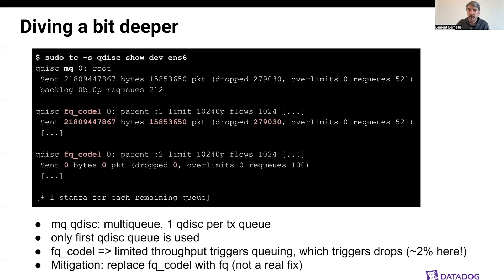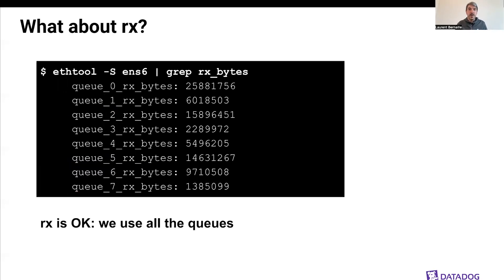What's interesting is the number of drops: we were dropping about 2% of packets. The reason for this is that the CoDel queuing discipline drops packets almost as soon as we start buffering, to avoid buffer bloat and additional latency due to buffers. When we saw this, we tested a mitigation — replacing FQCoDel with FQ — and that worked. It's not a real fix because we can still hit the maximum throughput of an instance, but at least we avoided the drops impacting TCP throughput. Looking at the receive queues, everything seemed fine, so it was only the transmit side that was impacted.